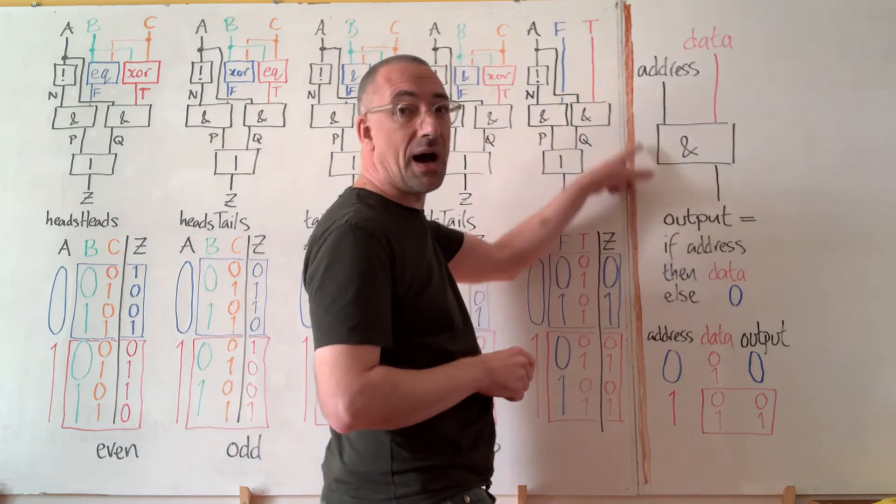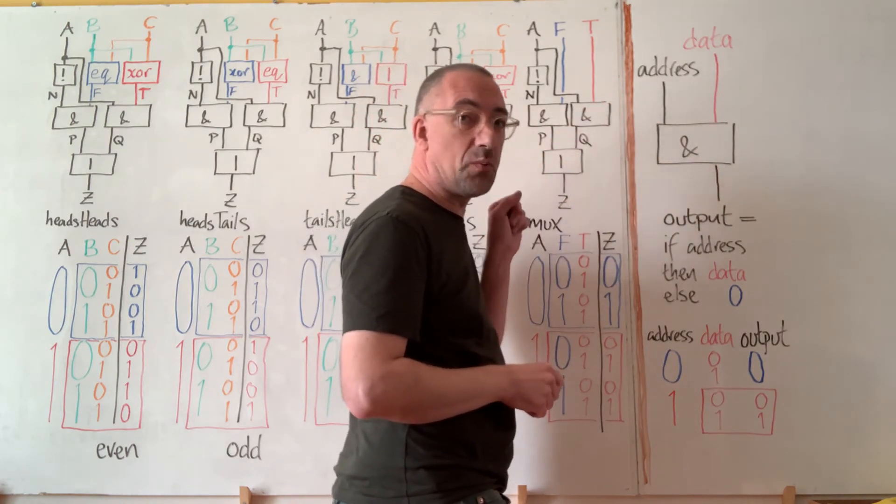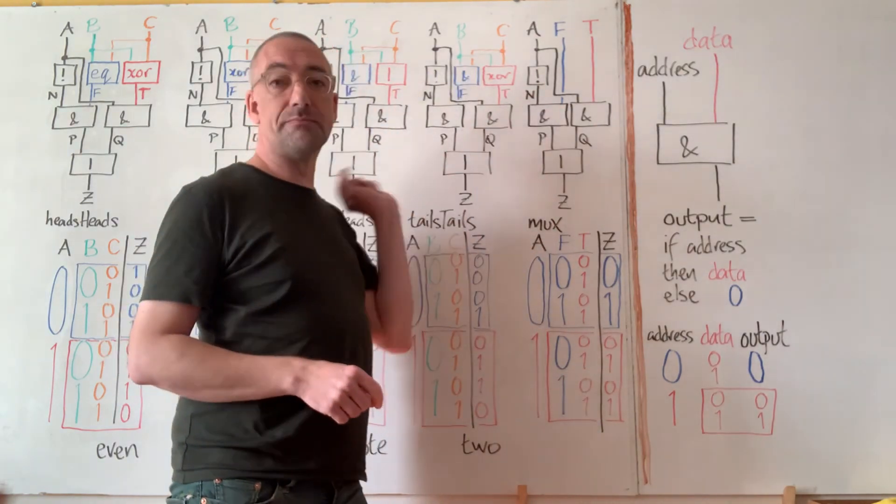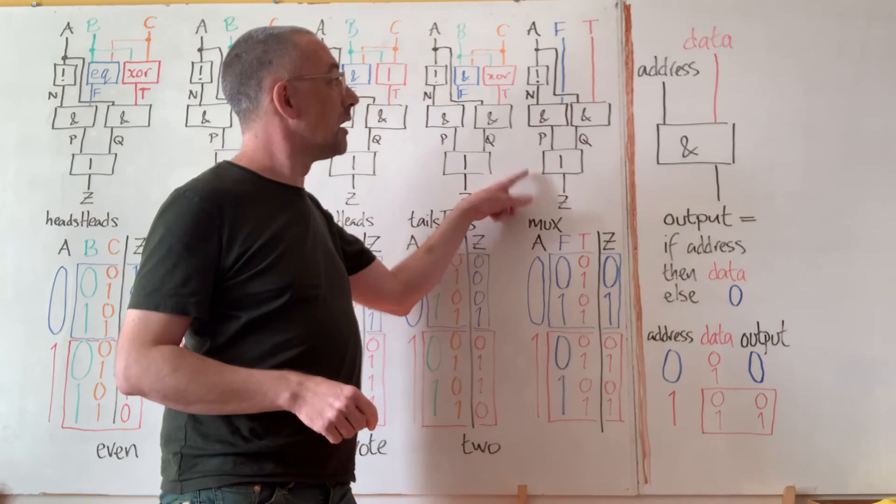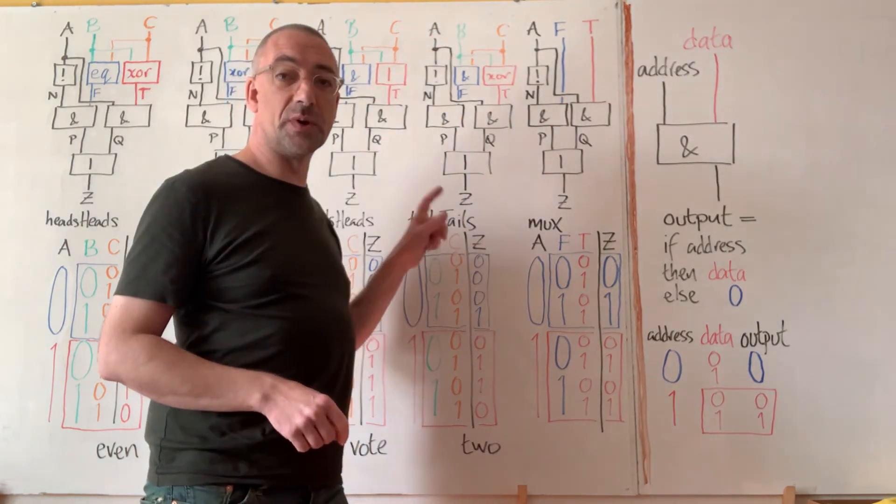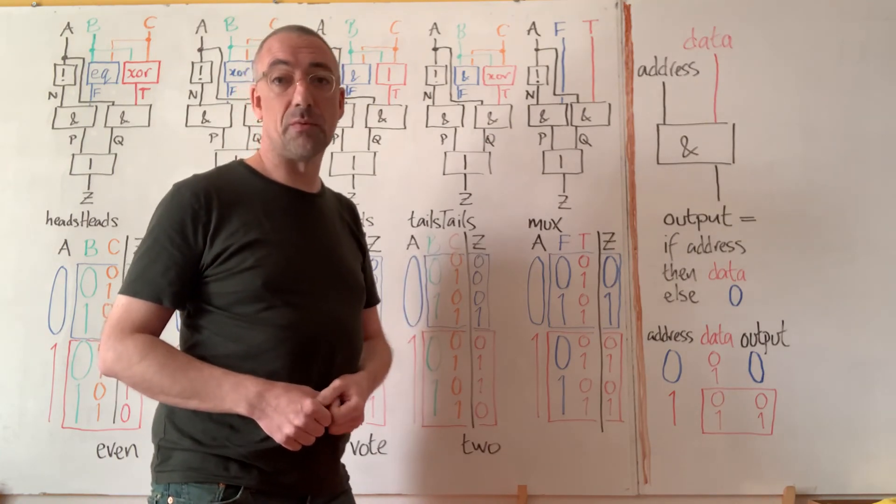We think of the data as being masked by the address. We get the data only if the address says we want it. And then MUX uses two AND masks with an OR, an opposite addressing logic to act as a switch between two other signals into which we can plug whatever we like.